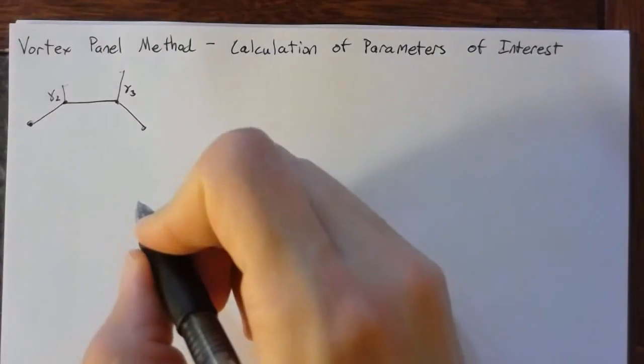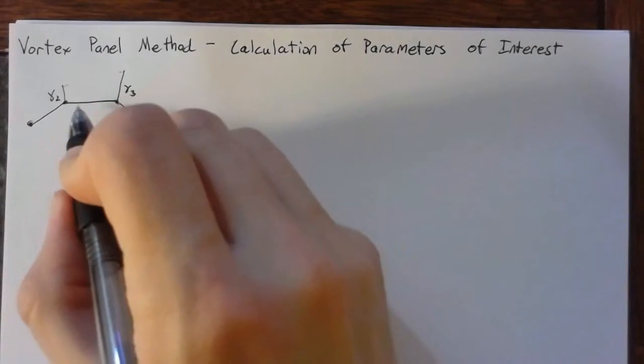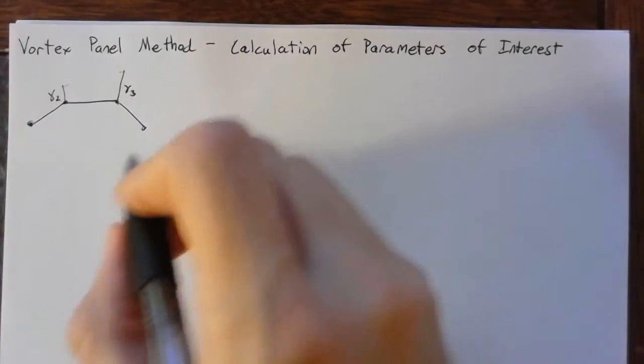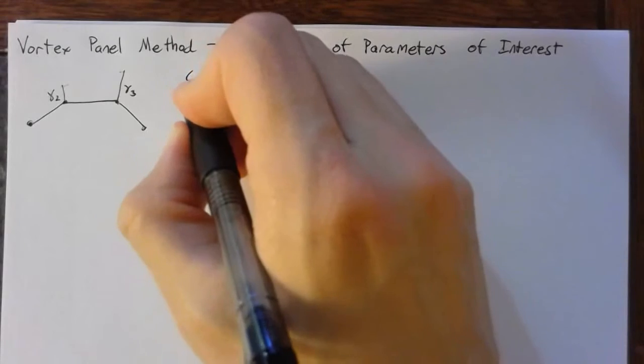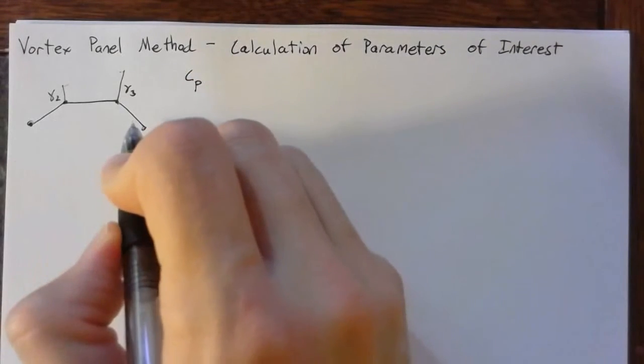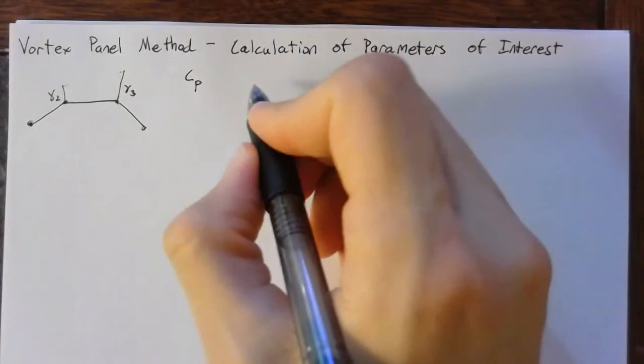So to start off, let's look at the Cp, the coefficient of pressure, over the airfoil surface.